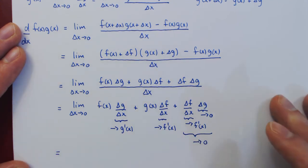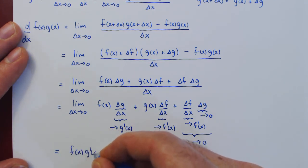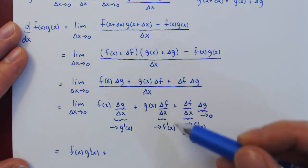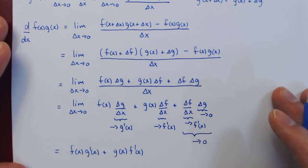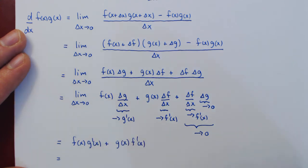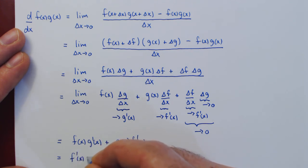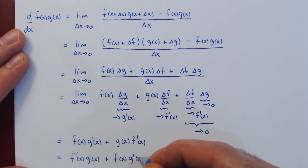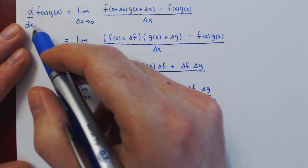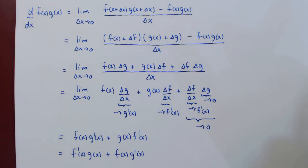In the limit, we are left with f(x)·g prime(x) plus g(x)·f prime(x). Swapping the order of these two terms, we recover the familiar product rule: the derivative of f times g equals f prime(x)·g(x) plus f(x)·g prime(x). This completes the proof of the product rule of differentiation.